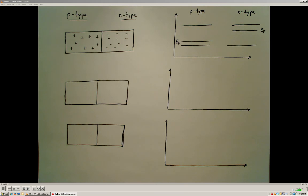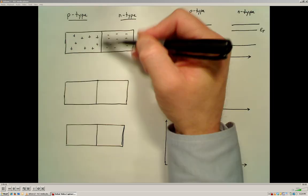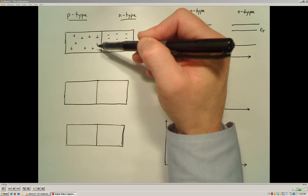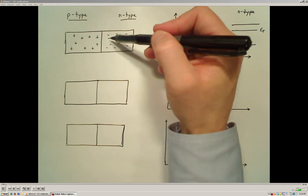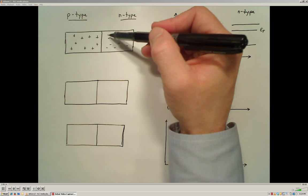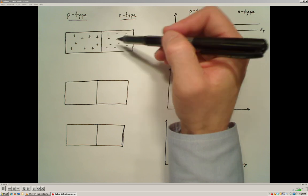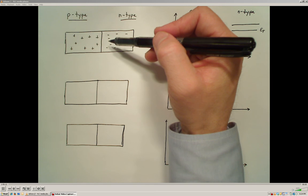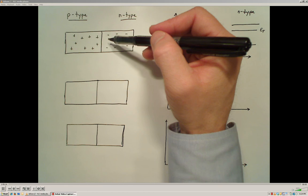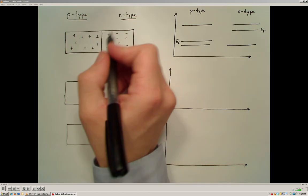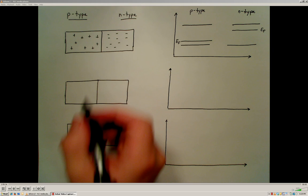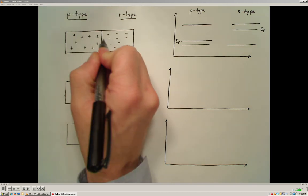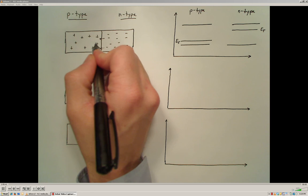So what's going to happen when we bring these two materials together? When we bring these two materials together, the p-type side has holes that are wanting to grab electrons to fill their valence states, and over on the n-type side we have electrons that are wandering throughout the crystal without a good home atom to orbit around. So right in the area where we join the materials together, we're going to get a migration of charges across this junction. Some of these negative charges are going to move over towards the p-type side to fill some of these holes.